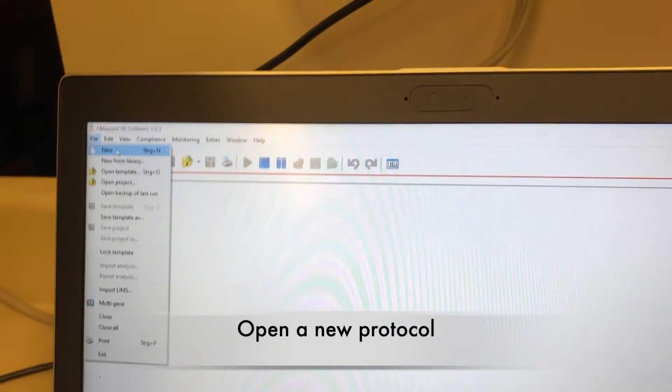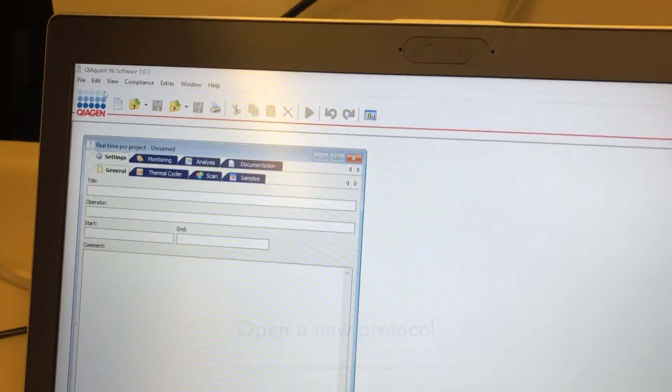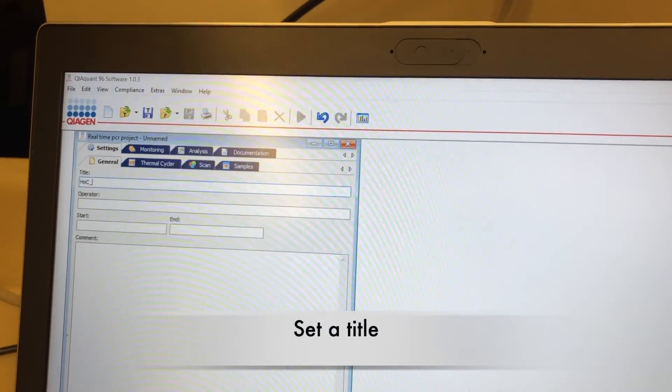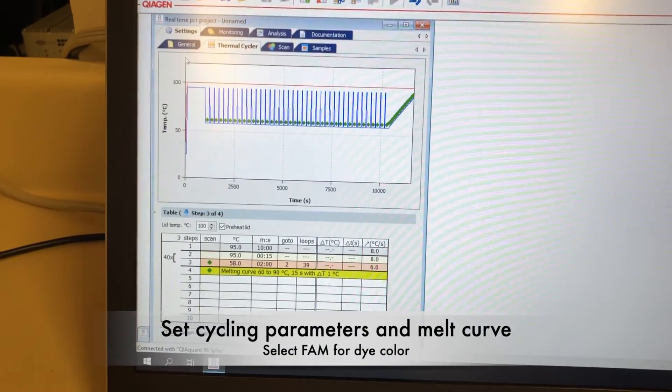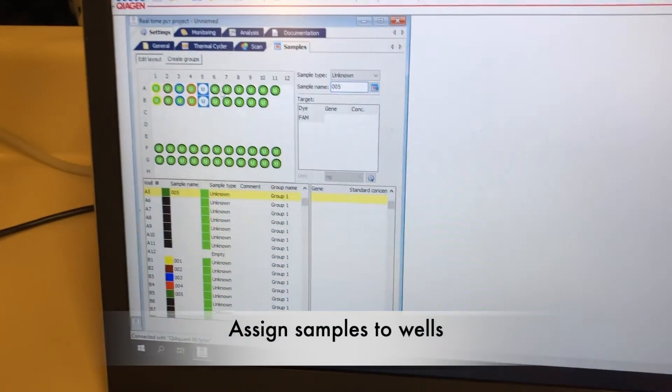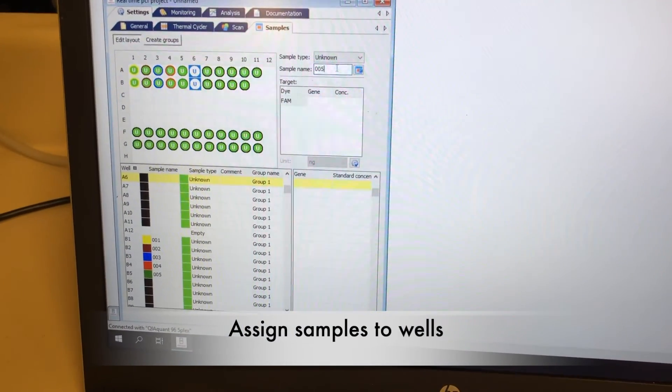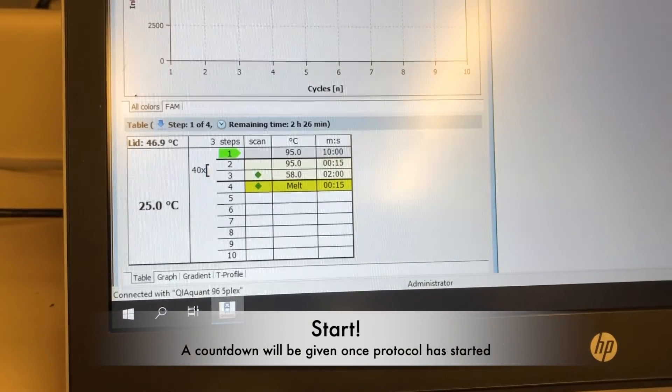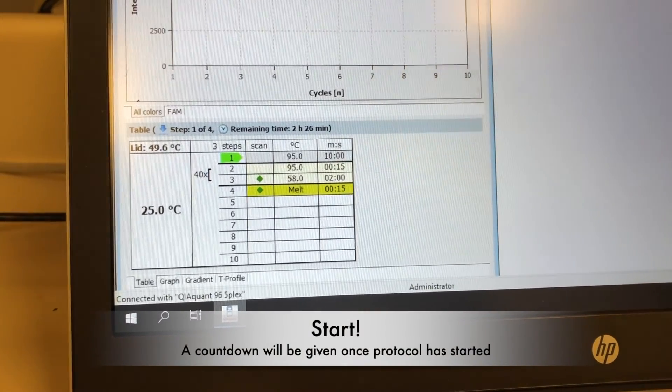Open a new protocol under File, then name your protocol. Set your cycling parameters and melt curve. Based on your blueprint, assign each sample to the proper well. You will be given a countdown once the protocol has started.